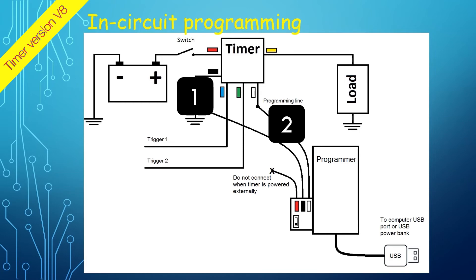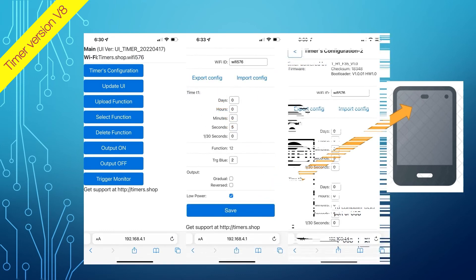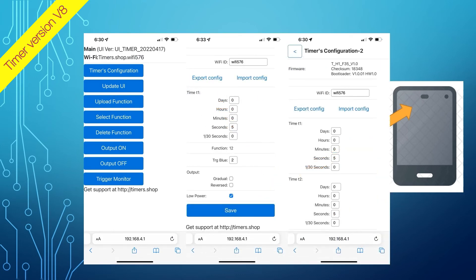The programmer acts as an adapter between the smartphone and the timer. All the programming is done via smartphone with an intuitive user interface. A smartphone does not require any additional applications, and any smartphone or Wi-Fi-capable tablet can be used for programming.